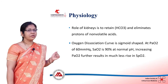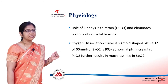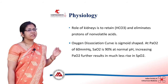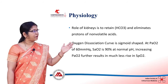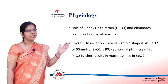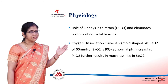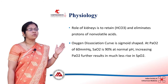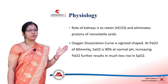Now, remember your oxygen dissociation curve? It's an S-shaped curve. At a PAO2 of 60 mmHg, saturation is 90% at normal pH. Increasing PAO2 further results in much less rise in SpO2.